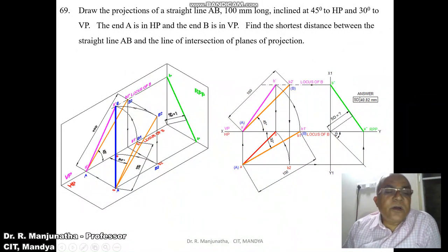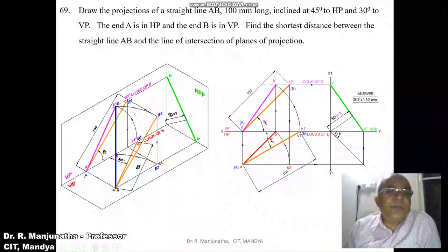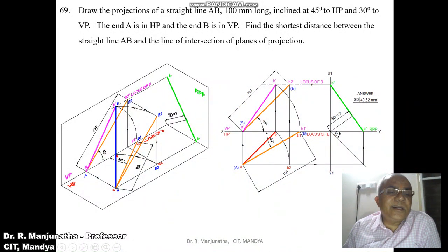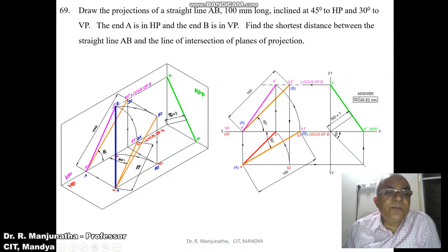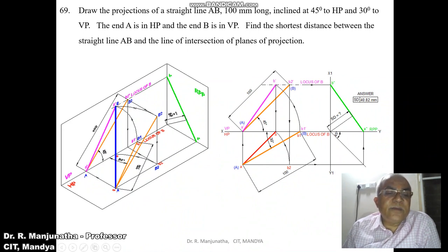To find the top view, take the true length in the front view. That line must be parallel to VP, meaning A is in front of VP by a certain distance, so B2 should also be in front of VP by the same distance. Draw a vertical projector from B2-dash to the locus of A in the top view. The line AB2 is parallel to VP. When you rotate so that B2 is on VP, with A as center and radius AB2, draw an arc.